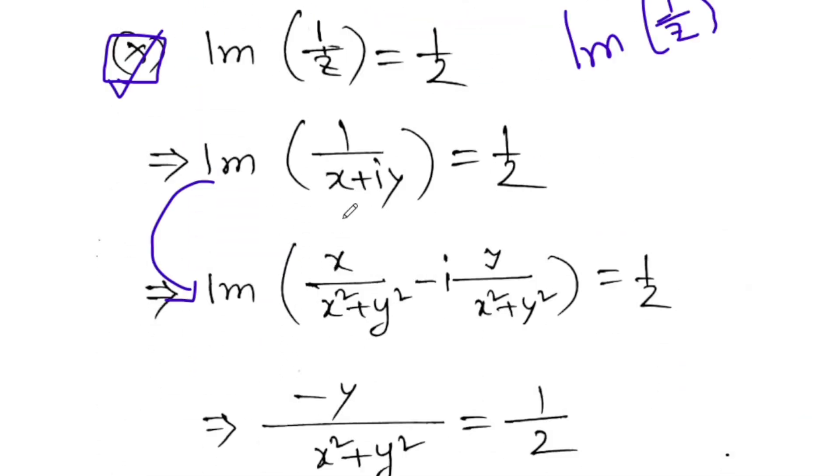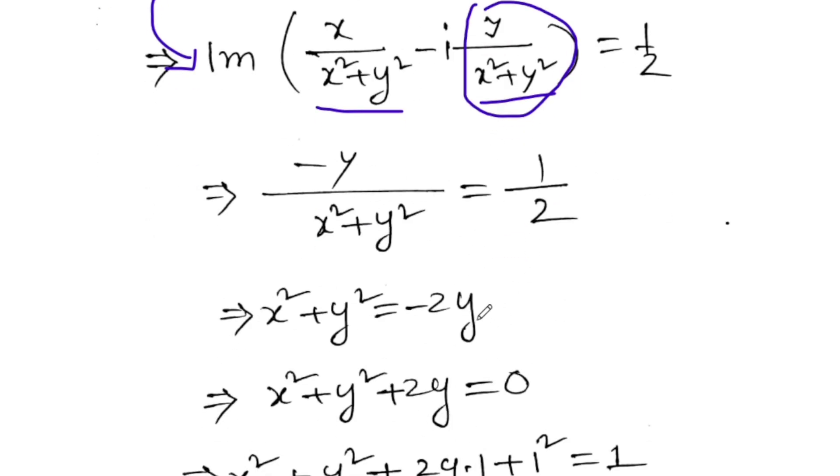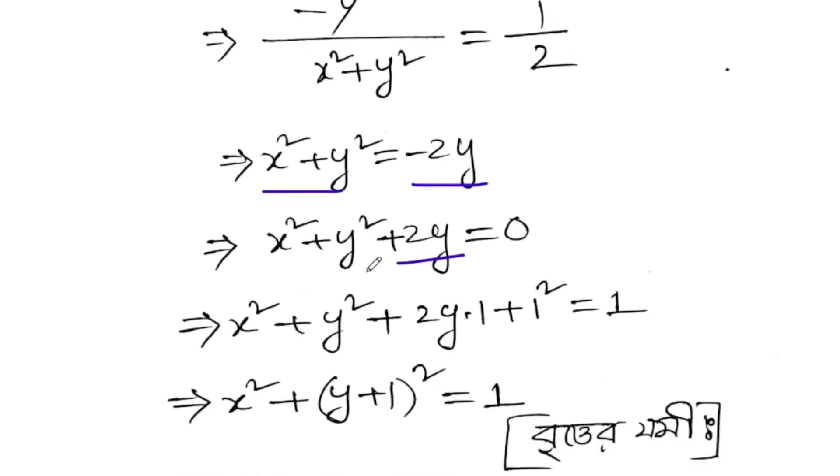The imaginary part is minus Y over (X squared plus Y squared). So minus Y over (X squared plus Y squared) equals one-half. This gives us X squared plus Y squared equals minus 2Y, which means X squared plus Y squared plus 2Y equals zero.